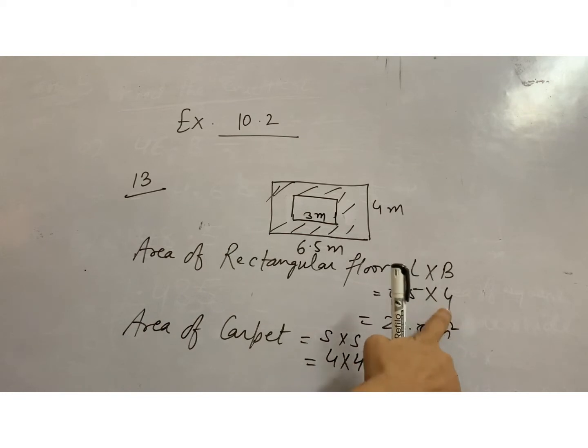4 fives are 20, 4 sixes are 24, 24 and 2, 26. Okay, now area of remaining floor.